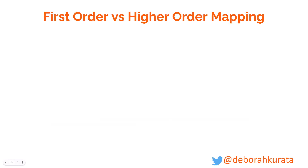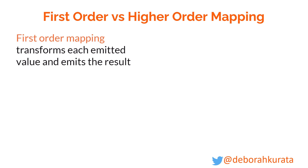First-order versus higher-order mapping. First-order mapping transforms each emitted value and emits the result — something like this. We get an emitted value into X, we multiply it by 2, and we get out the result.